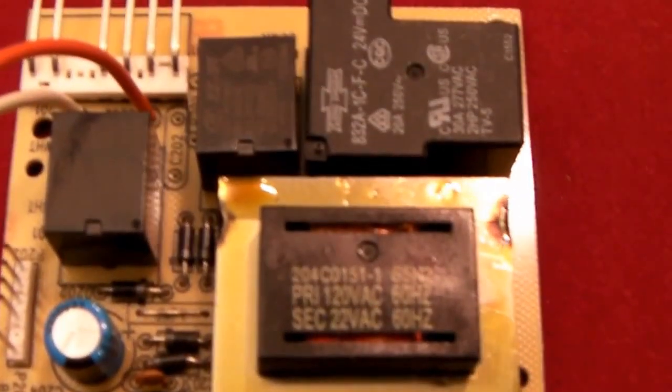It was a transformer, a bunch of diodes, very simple full-wave bridge power supply, a capacitor, one large electrolytic capacitor, this blue one you see right here.